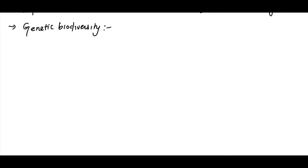Whenever we talk about species, for example homo sapiens — because we belong to the same species, if you compare a person from Northern India, the body structure of that person versus a person from Kashmir or a colder region, you will find that the person from hot conditions will have slightly more melanin synthesized compared to the person from Kashmir. This is what we call variation within a particular species.